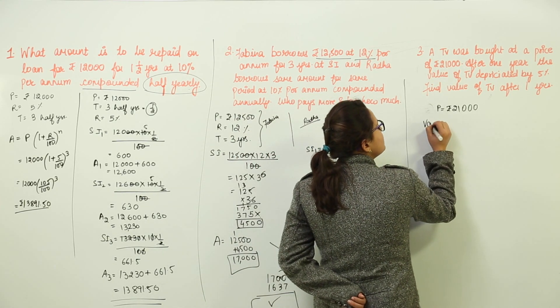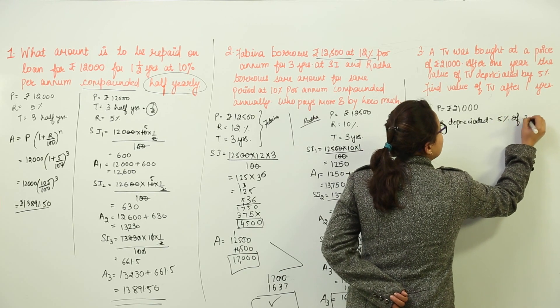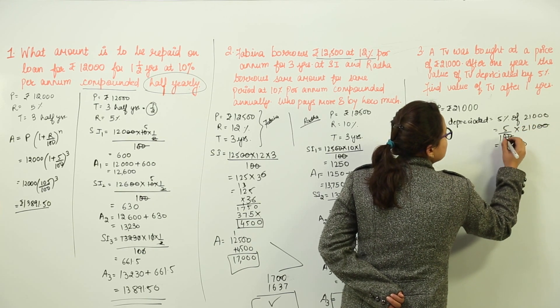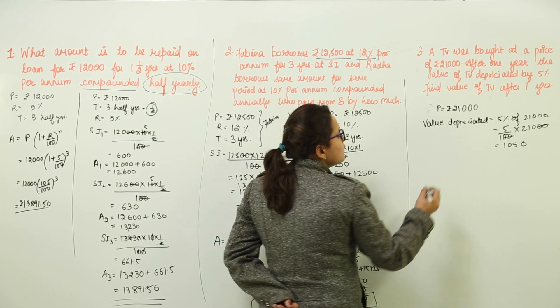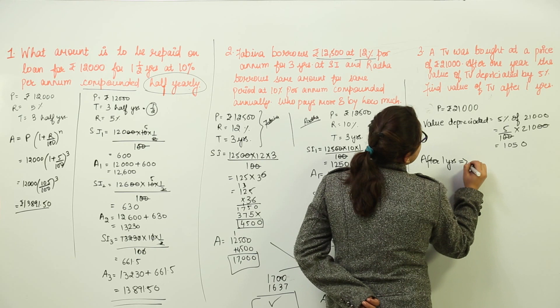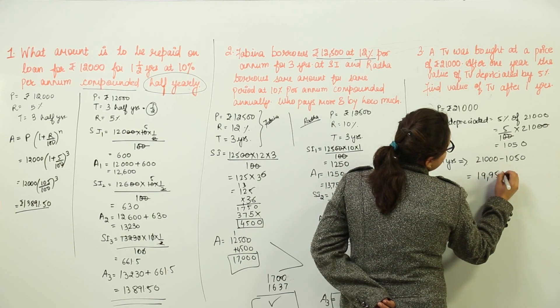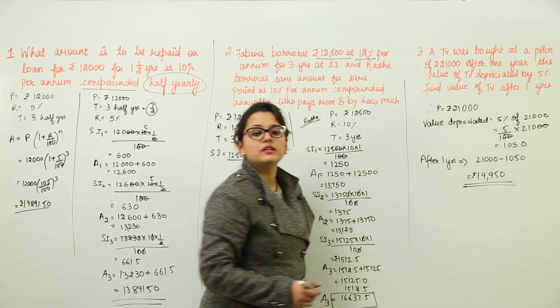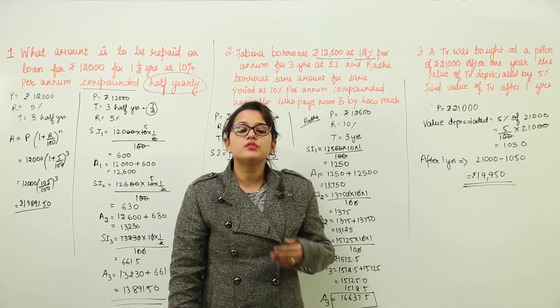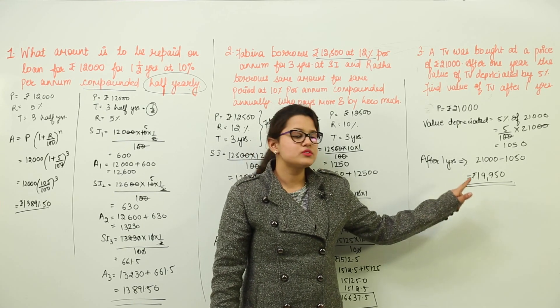The value depreciated can be calculated. Value depreciated would be equal to 5% of 21,000. That would be equal to 5 upon 100 into 21,000. On solving, you would get 1,050 as the depreciating value. After 1 year, the value that you will be getting would be 21,000 minus 1,050 giving you Rs. 19,950 as the value of the TV. After buying a TV for Rs. 21,000, after 1 year, if the person wants to resale it, its value gets reduced by 5%. So, he would be able to sell the TV at Rs. 19,950.